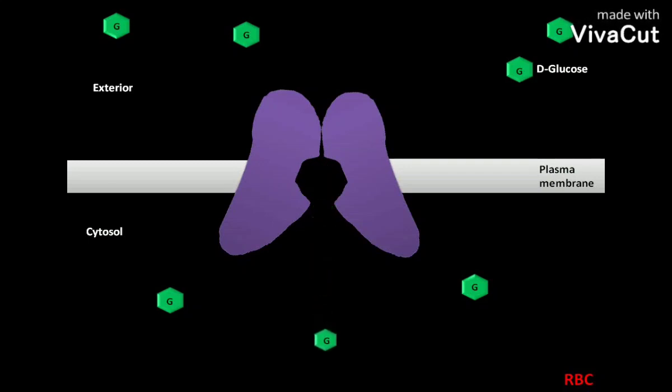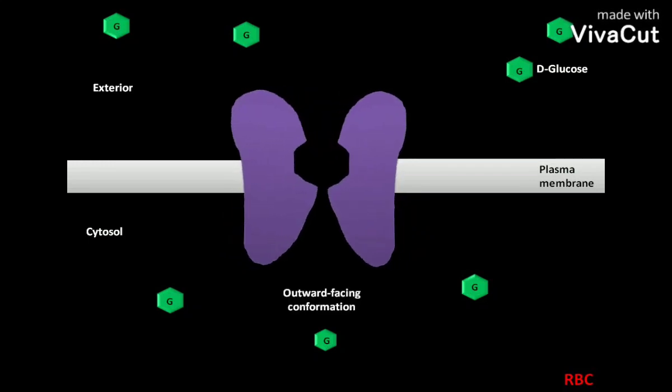Finally, the GLUT1 undergoes a structural change to form an outward facing conformation. In the cytosol,